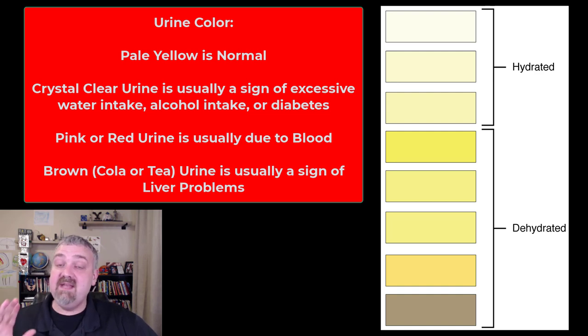If your urine is pink or red, you need to be thinking blood from a kidney stone or a tumor or something like that. If urine gets brown, they call it maybe a tea or a cola look to it. That can usually mean some sort of liver problems. So that's going to be what urine should look like.